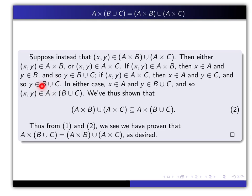So in either case, I've shown that X is in A and Y is in B union C. That's an and. And therefore, by definition, the ordered pair is in the Cartesian product of those two sets. So I started off by taking an element of the right-hand side and showed that it was in the left-hand side, and therefore this set is a subset of this set. Now if you compare both parts, you'll see that we've shown that this set is in fact equal to this set, and we're done.